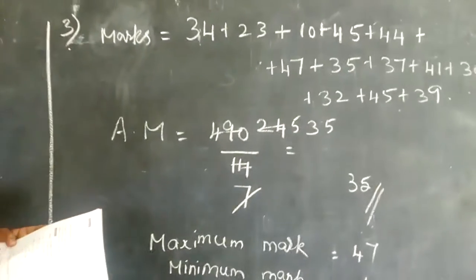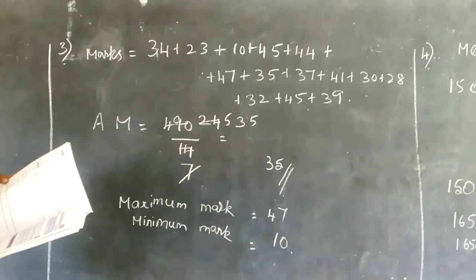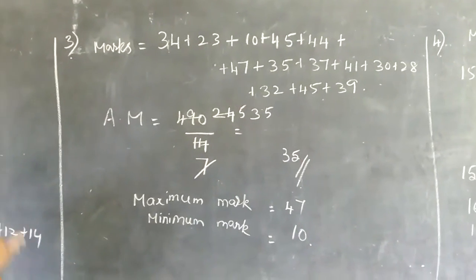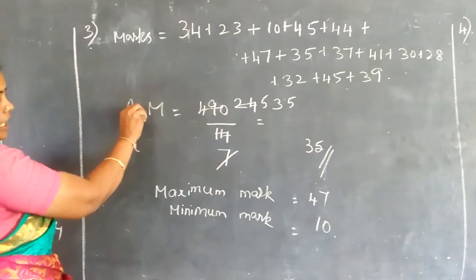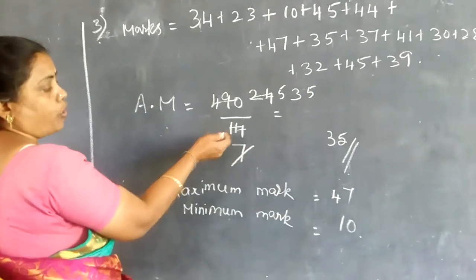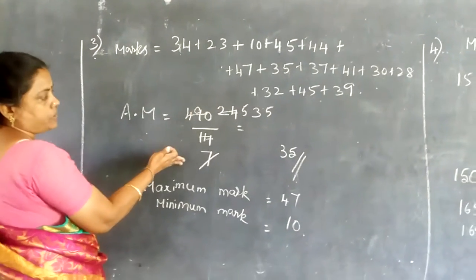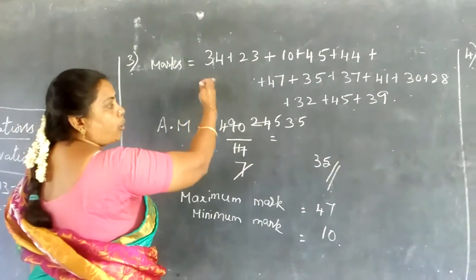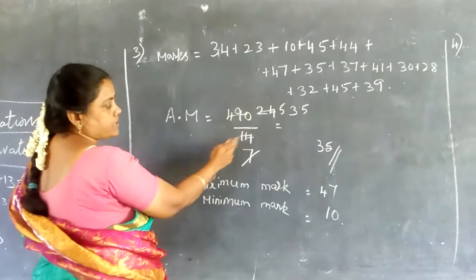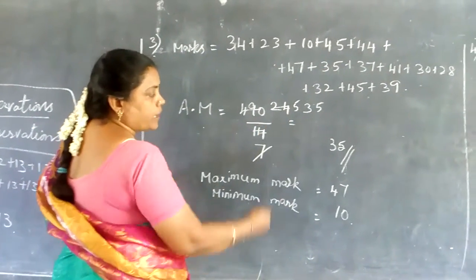The next question is question three. The marks of 14 students in a science test out of 50 are given, and the question is to find the mean mark. Mean and average are the same. So first add all the marks and divide by 14 students. Adding all values gives 490, divided by 14. Cancelling by 2 and then by 7 gives the value 35.